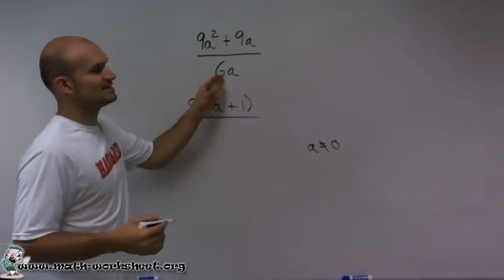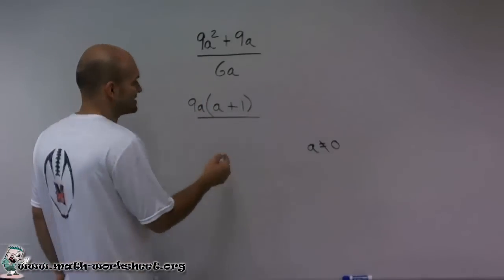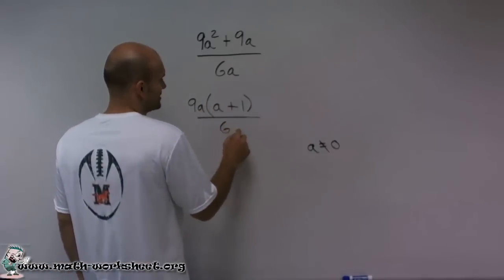and then divided by 6a. 6a doesn't have anything in common, so I can't combine that out. I'm just going to leave that as 6a.